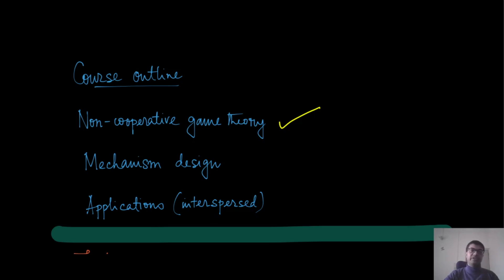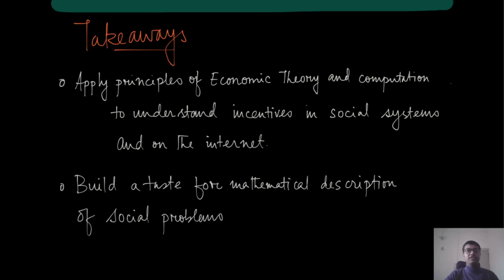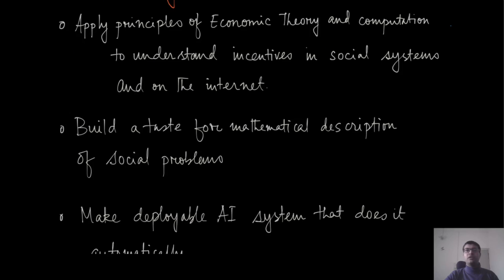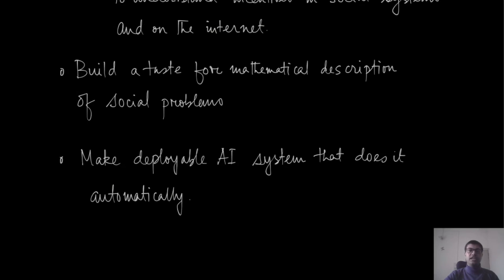In this course we will discuss two major topics: non-cooperative game theory — we will not cover cooperative game theory — and mechanism design, going in that order. As a viewer, the takeaways are: you can apply principles of economic theory and computation to understand incentives in social systems and on the internet; you can build mathematical descriptions of social problems where conflicting interests are at play; and you can design AI systems that perform this kind of decision-making automatically.